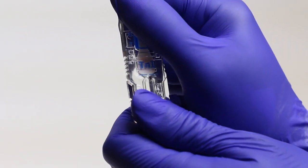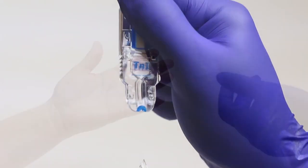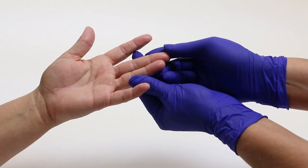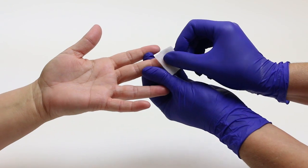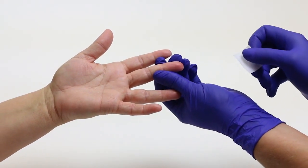First, remove the cap by pulling it away from the test. Next, choose to puncture either the ring or middle finger. Wipe the finger with an alcohol prep pad and allow it to air dry.